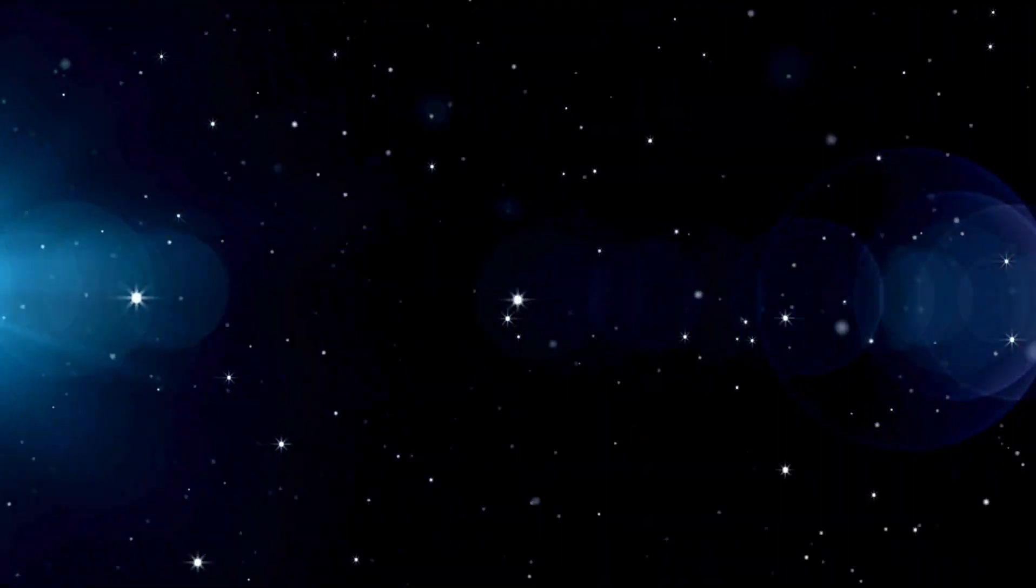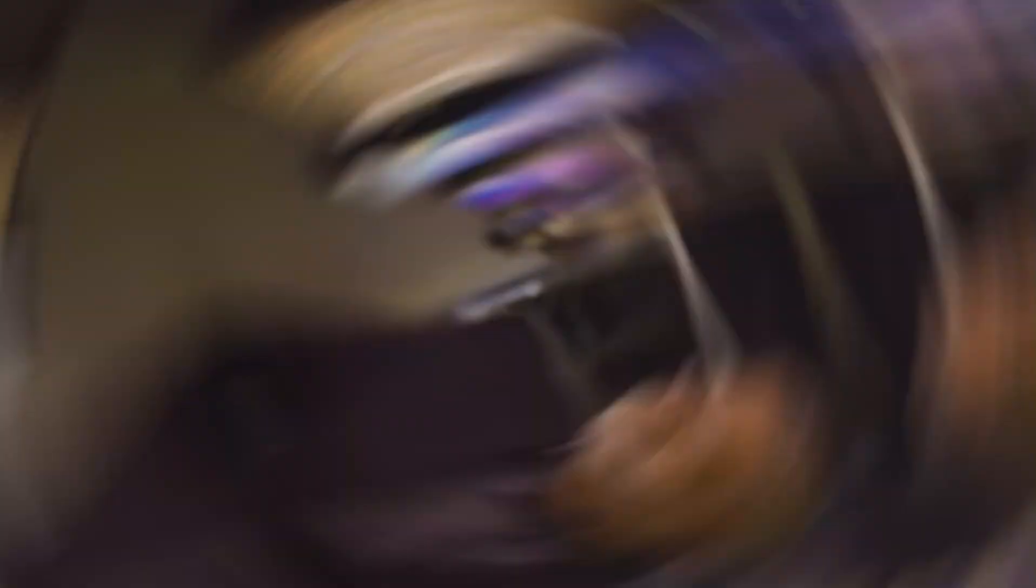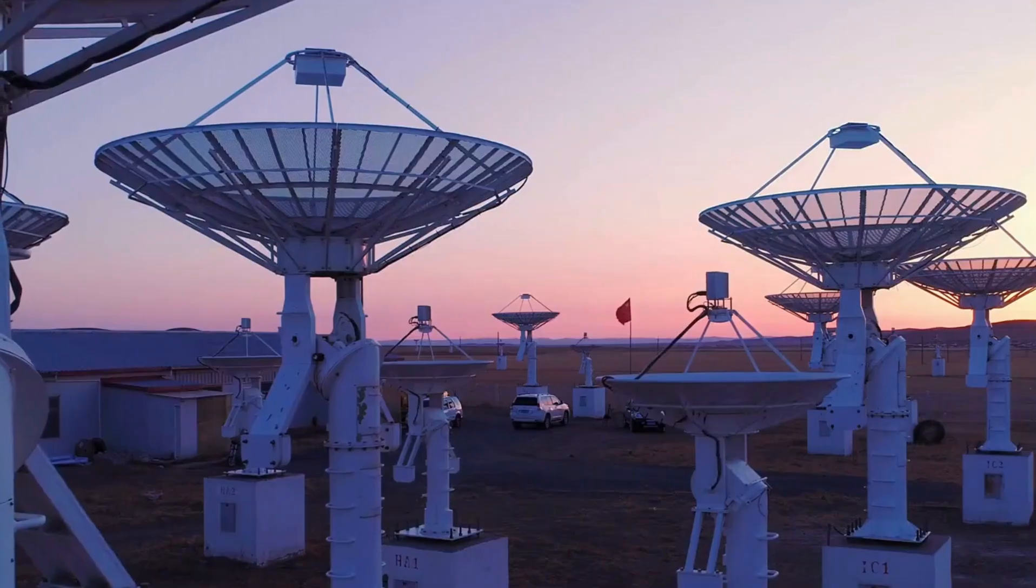However, there is a problem: this data does not match the large-scale irregularities observed in the current universe. The distribution of gravity suggests that matter in the early universe was more uniform than seen with gravitational lensing.